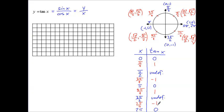Now we set up our coordinate plane with x-axis and y-axis, marked the same way as for sine and cosine: every 4 boxes is pi, so we have pi, 2 pi, 3 pi; and vertically, up 2 is 1, up 4 is 2, with -1 and -2 below. We can now mark our points: at 0 we get 0, at pi over 4 we get 1, and at pi over 2 we have undefined — which means an asymptote.